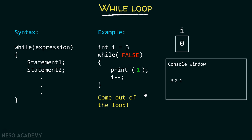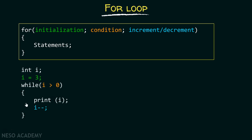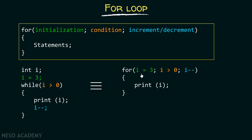Now let's try to understand how for loop works. First, let's consider the syntax of for loop. Inside the parenthesis, we have an initialization step, a condition step, and then an increment-decrement step. After that, we have a set of statements. This is the same example we saw in while loop — variable i assigned value 3, checking if i is greater than 0, printing and decrementing i. We can rewrite this entire program as: for i equals 3, i greater than 0, i minus minus — then print i. They are both one and the same.